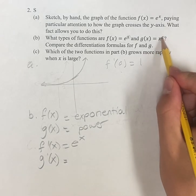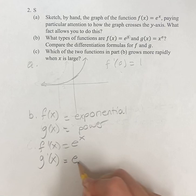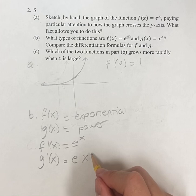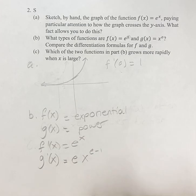So you take the exponent, you bring it down as a coefficient, then we have x and the new exponent is the old exponent minus 1.